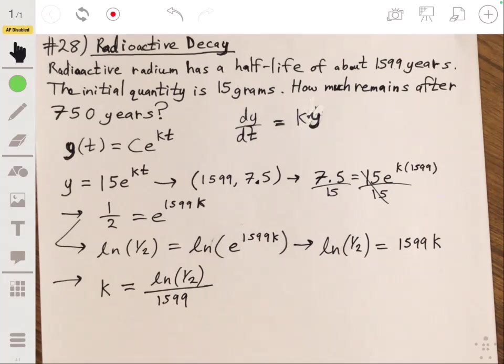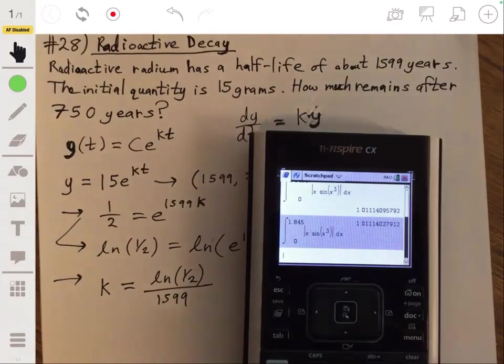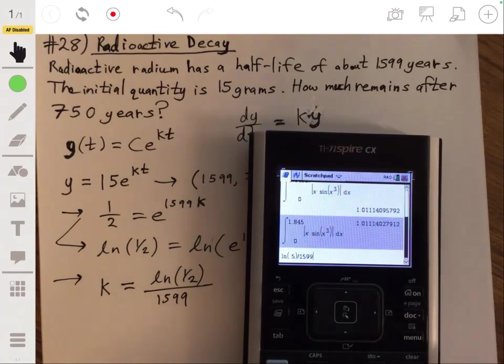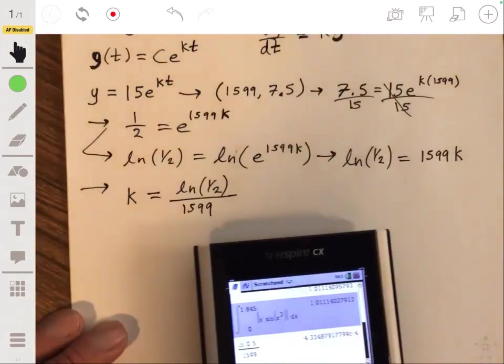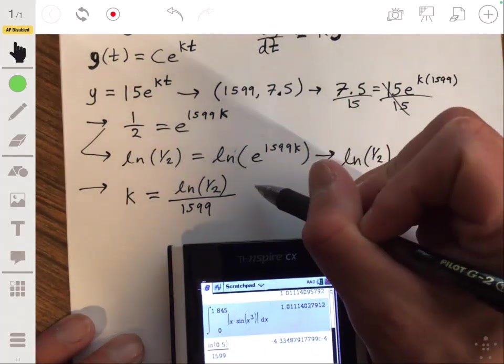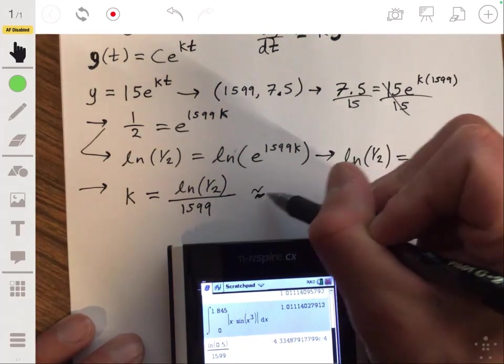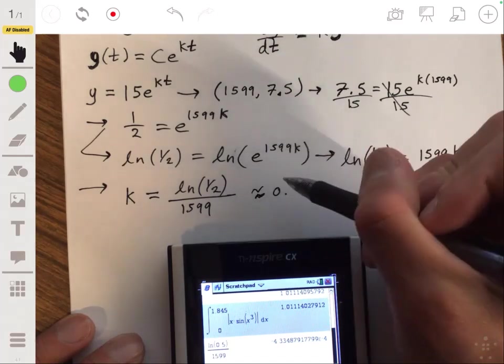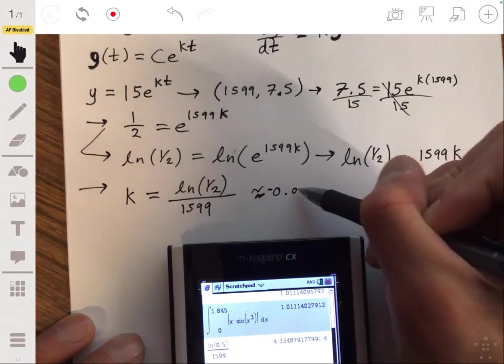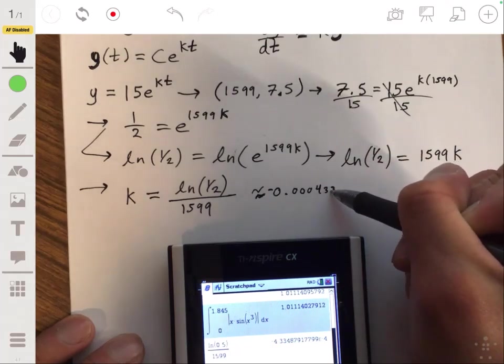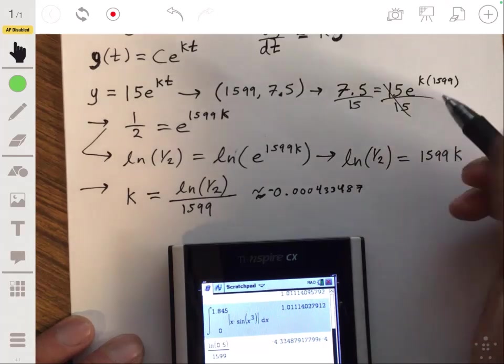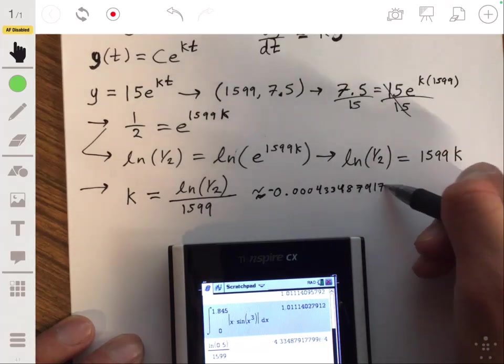So let's do some calculator action for that. Natural log of 0.5 divided by 1599. And we're going to get this small number, about negative 0.000433487917799.